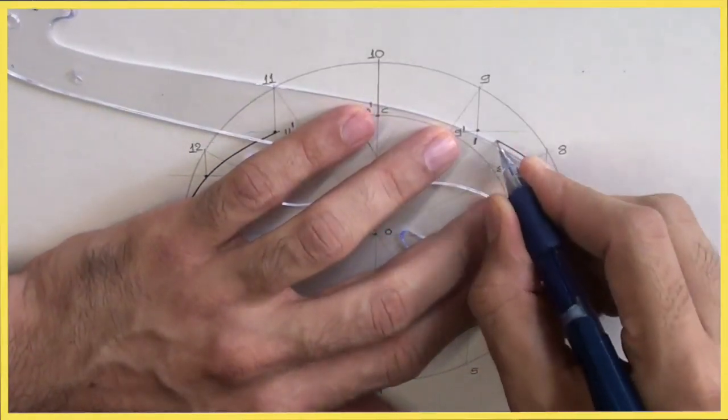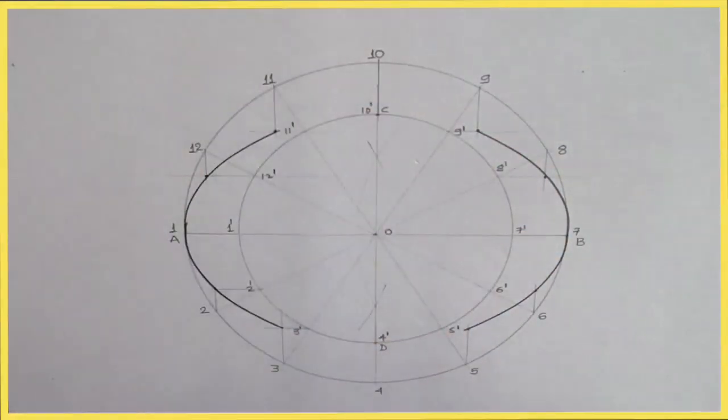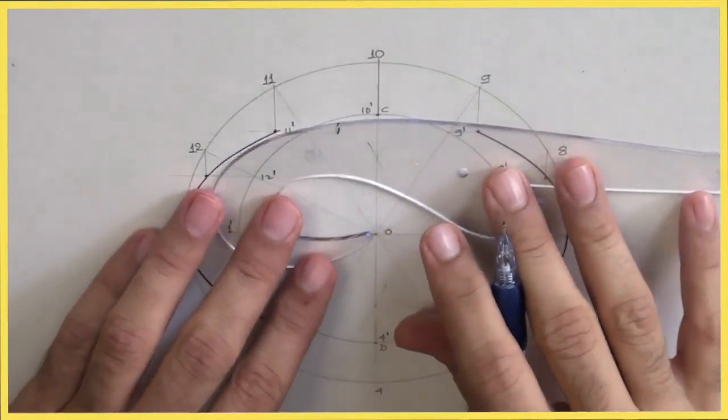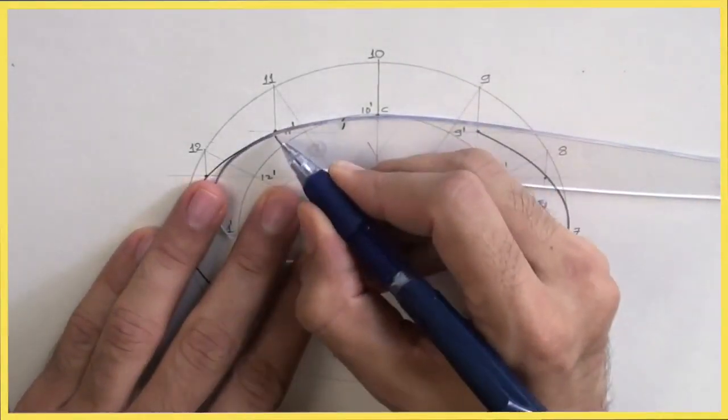So, again, I will flip. And I will draw curve. So, this much is done. Now, what we will do? Now, again, we will see where we can draw curve.